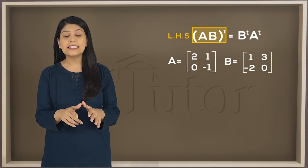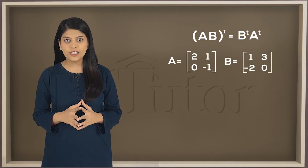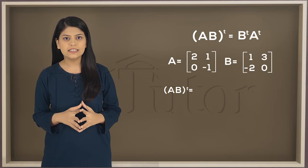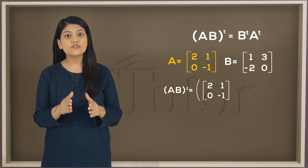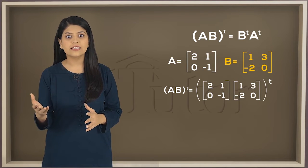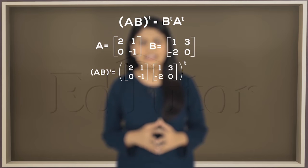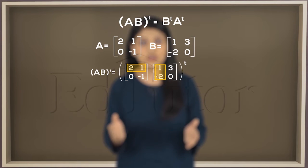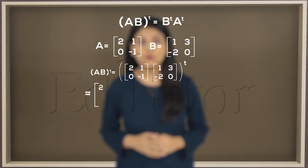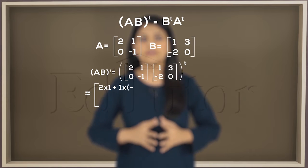Taking the left hand side and by solving the brackets first, we find AB. Matrix A is on the left and B is on the right. Now multiply. Taking the first row first column and multiplying 2 with 1 and 1 with minus 2.